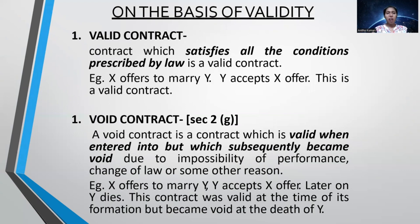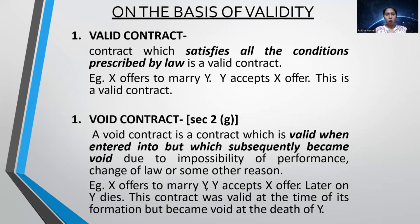On the basis of validity — valid contract: when a contract fulfills all the conditions prescribed by law, it is called a valid contract. For example, X offers to marry Y and Y accepts X's offer — this is a valid contract because there is no force or threat involved. When two parties enter into a contract and it fulfills all the essential elements of a contract, that is called a valid contract.